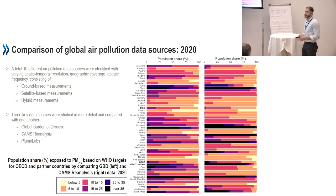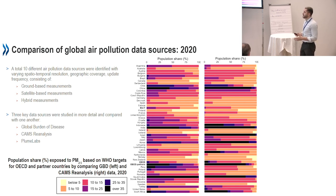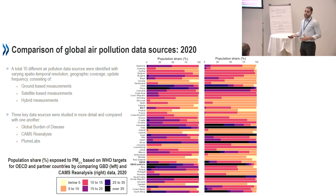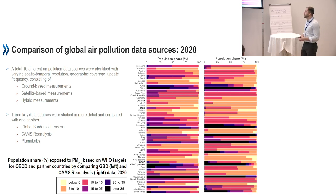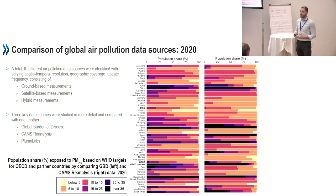We identified up to 10 different global air pollution datasets. These are a mix of ground-based measurements, satellite data, or a hybrid of both. Three were specifically analyzed further: the Global Burden of Disease dataset, used by various international organizations for mortality and morbidity; the CAMS re-analysis, which uses Copernicus and European Space Agency data; and Plumelabs, a private company whose data we were lucky to obtain for comparison with other data sources.